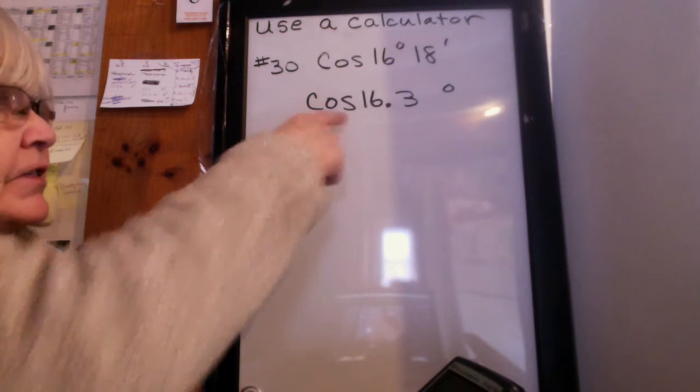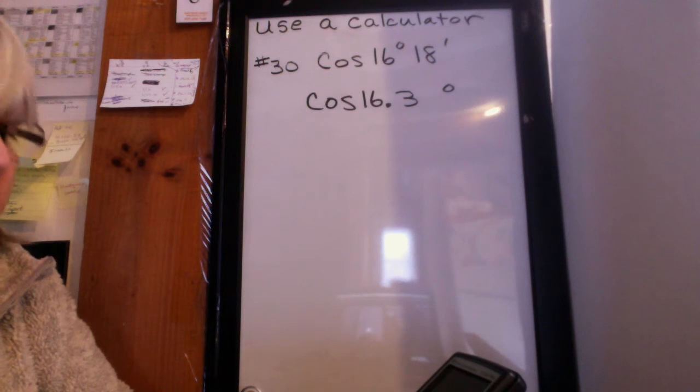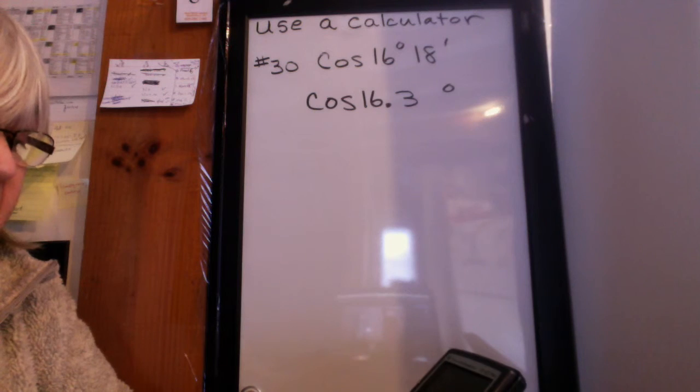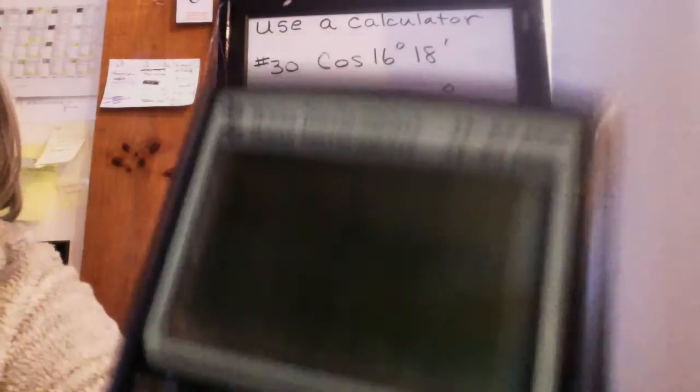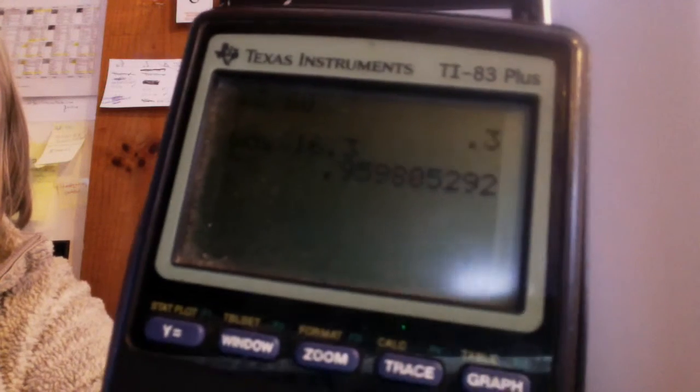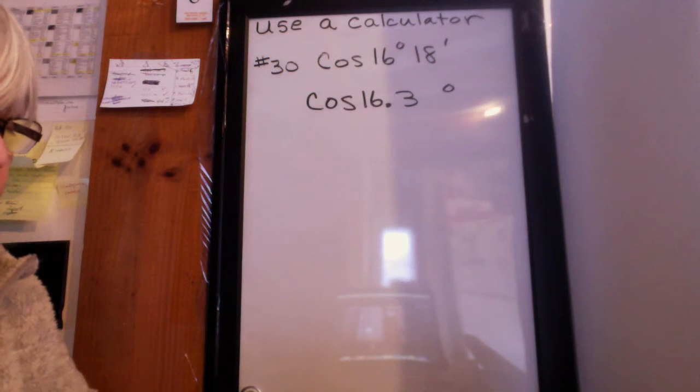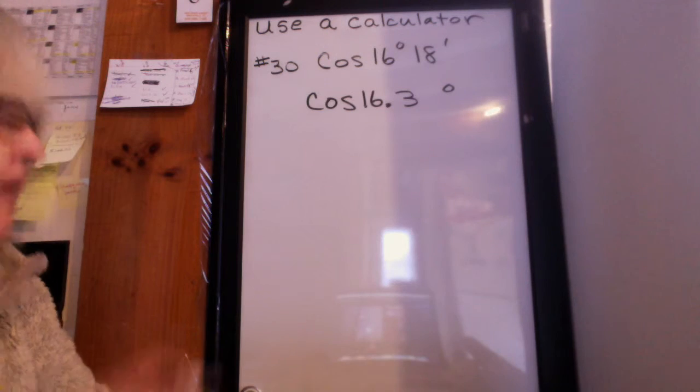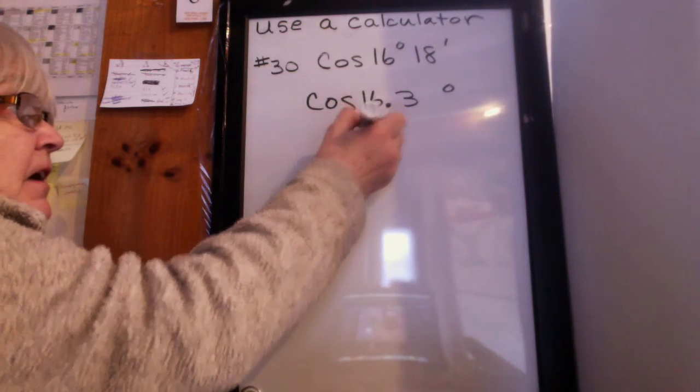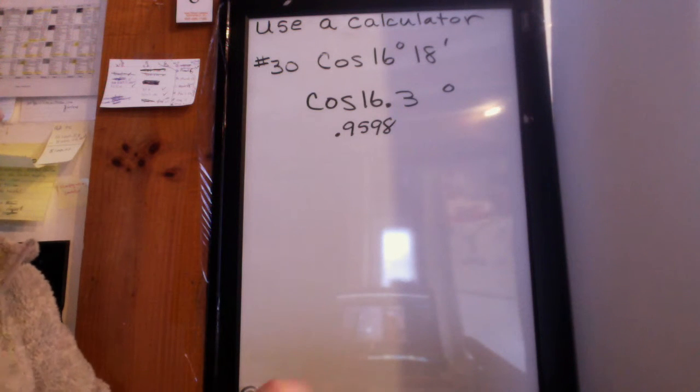So now I'm going to type in cosine of 16.3. So type cosine and then 16.3 and then hit enter. And once you do that, you can read a decimal off of there. We want a decimal to four places. The directions in the book say to round to four places. So the answer comes out to be 0.9598.